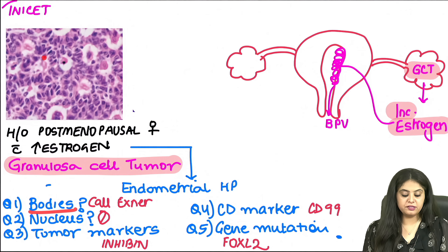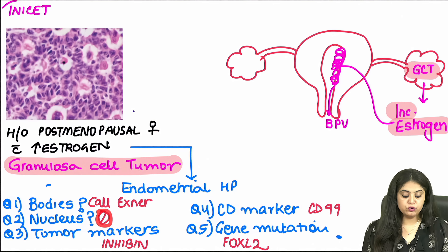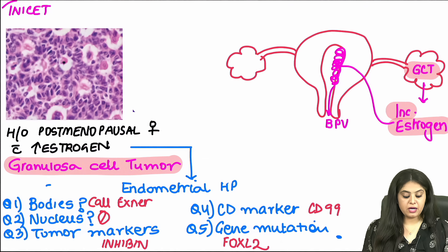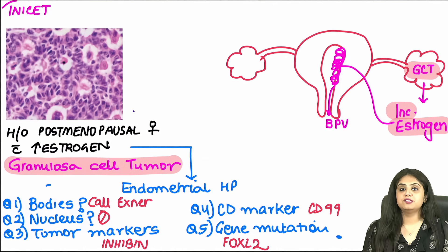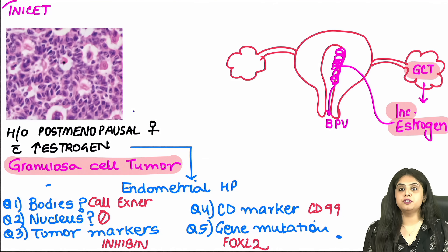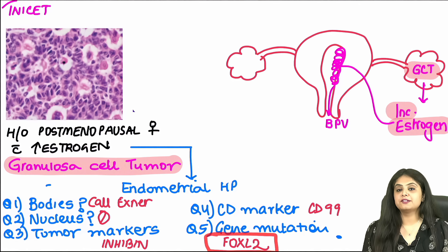The bodies that you see — these round bodies with pink material in the centre — are called Call-Exner bodies. The nuclei show grooves which look like a coffee bean nucleus. The tumour marker is inhibin. There is a CD marker that is CD99 positive. Please note CD99 is positive both in granulosa cell tumour of the ovary as well as Ewing sarcoma in the bone. And lastly, the gene mutation asked is the FOXL2 gene mutation.